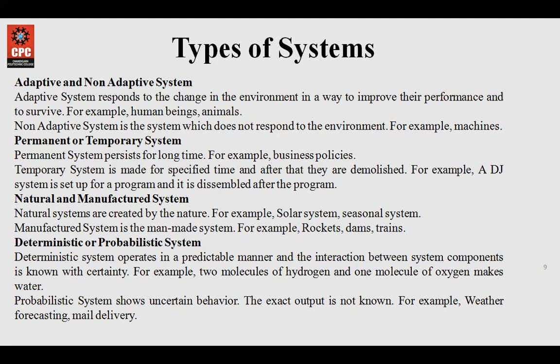Then comes deterministic and probabilistic systems. Deterministic ones are those that operate in a certain predictable manner. For example, 1 plus 2 always gives 3 — it is already determined. Another example: two molecules of hydrogen combined with one molecule of oxygen always makes water. Then comes the probabilistic system: if I send someone an email through Gmail, there is a probability that they will receive it, but also a probability that they won't. This is an example of a probabilistic system — it has uncertain behavior.